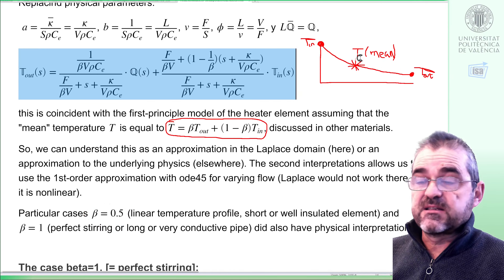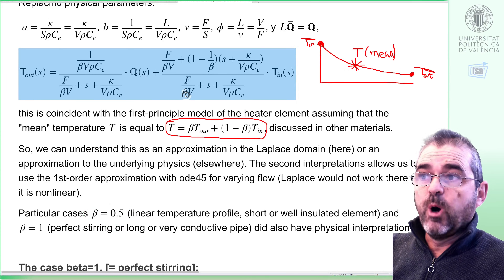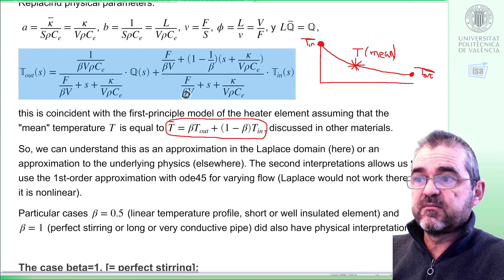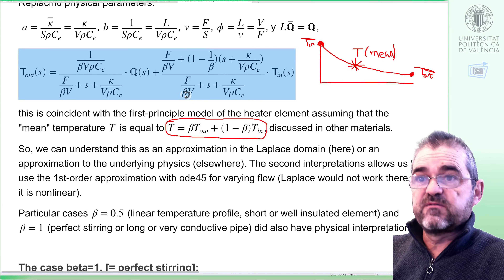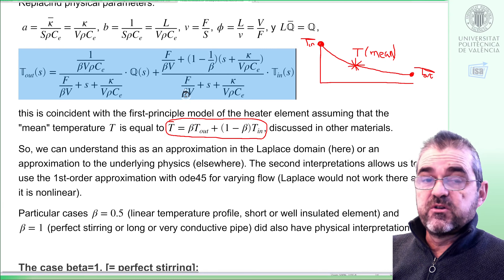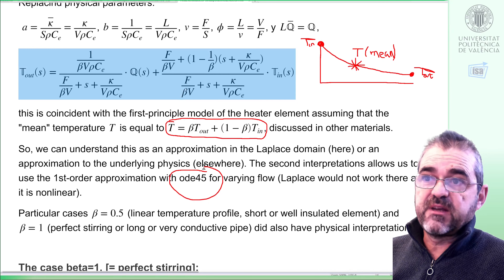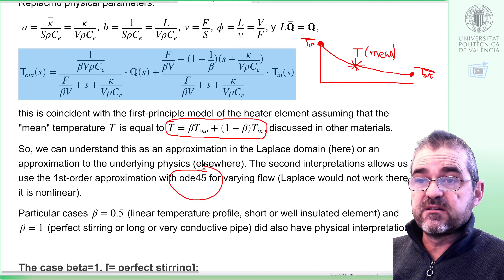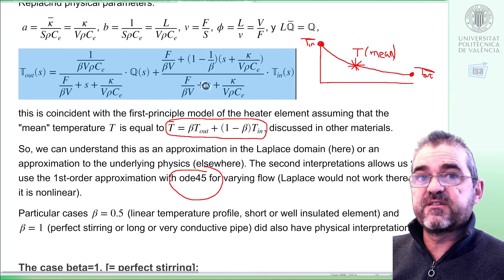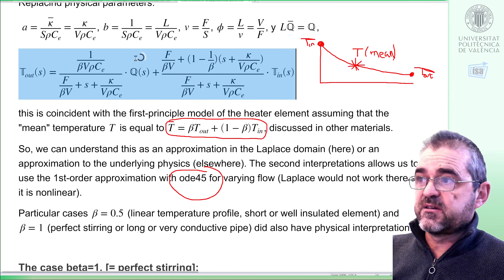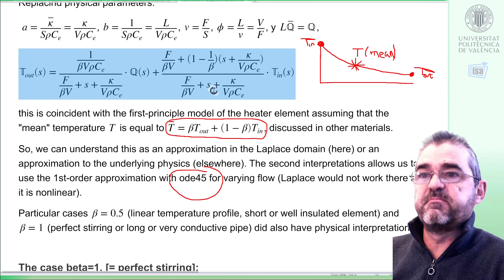The important conclusion is that this blue equation, obtained by approximations in the Laplace domain, can equivalently be obtained in state-space form from physical insight. This second interpretation allows us to use the physical-based model in simulations with changing flow, whereas the Laplace transform was obtained for constant flow. So it is better to have that physical interpretation confirming that the exponential approximations made here actually mean something in the energy balances.